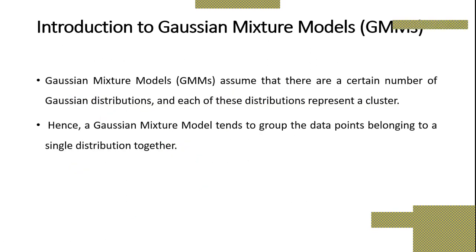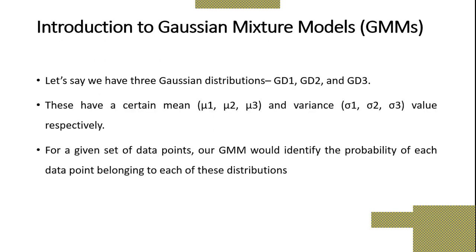The Gaussian Mixture Model assumes that there are a certain number of Gaussian distributions, and each of these distributions represents a cluster. Hence, the GMM tends to group data points belonging to a single distribution together. Let us say we have three Gaussian distributions named GD1, GD2, and GD3, with mean values mu1, mu2, and mu3, and variances alpha1, alpha2, and alpha3. For any given set of data points, our GMM will identify the probability of each data point belonging to each of these distributions.